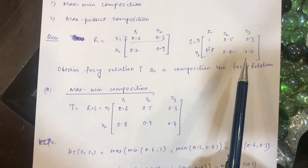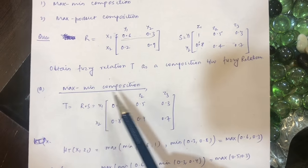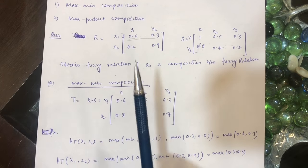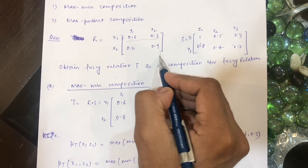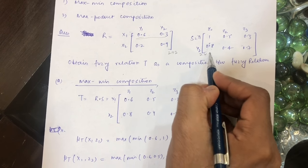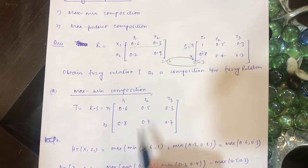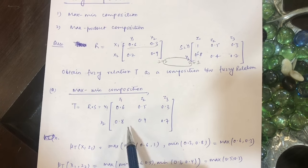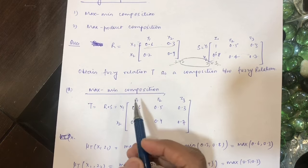Let us look at max-min composition first. We have a 2×2 matrix for R and a 2×3 matrix for S, so the final result will be a 2×3 matrix.